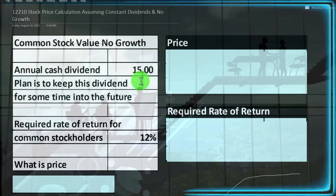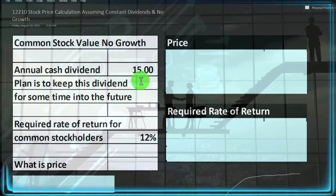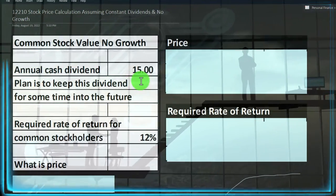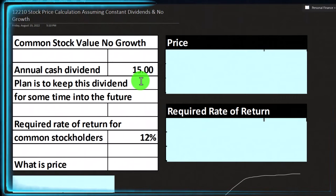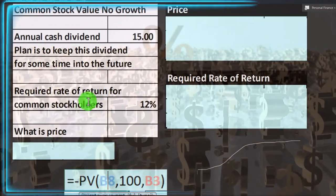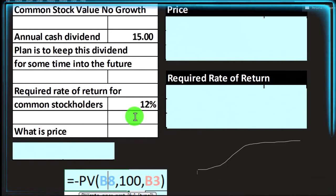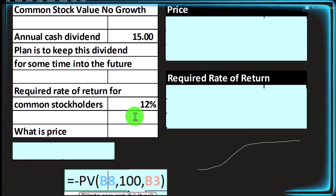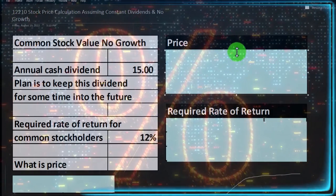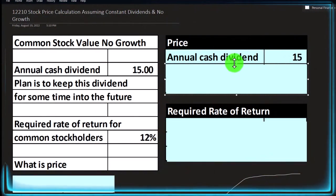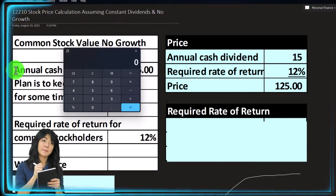This is similar to valuing just the interest payments on a bond except that, unlike a bond, there's no maturity date — the dividends could in theory go out forever. Those payments far into the future will become relatively small in terms of present value. The required rate of return for the common stockholder is 12% — that's the market rate, what we think we can get on similar-risk investments. So what would the price be? It's simply $15 divided by 12% = $125.